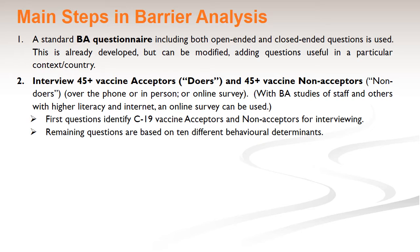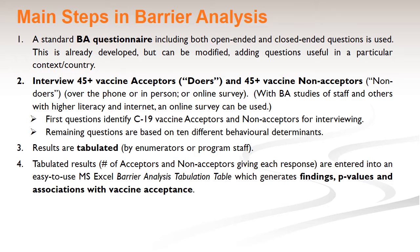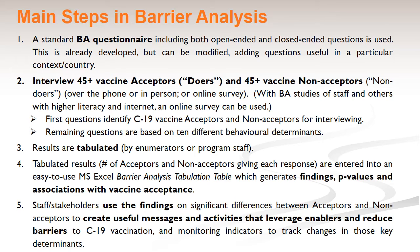The first questions identify COVID-19 vaccine acceptors and non-acceptors for interviewing, and the remaining questions are based on 10 to 12 different behavioral determinants depending on what you're studying. The results are then tabulated by numerators or project staff, and the tabulated results — that is the number of doers and non-doers, acceptors and non-acceptors giving each response — are entered into an easy-to-use MS Excel barrier analysis tabulation table. That automatically generates your findings, your p-values, your associations with vaccine acceptance for example, and then staff use the findings on significant differences between the doers and the non-doers to create useful messages and activities that leverage those enablers and reduce the barriers to the behavior such as COVID-19 vaccination.